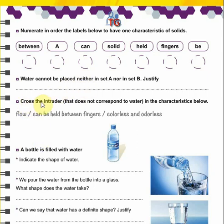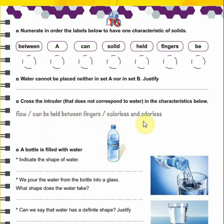Here we are going to cross the intruder — the characteristic that does not correspond to water. The characteristics listed are: flow (water does flow), 'can be held between fingers' — this is wrong, water cannot be held between fingers, so we cross this one. Then colorless and odorless — colorless means it has no color — this is correct for water.